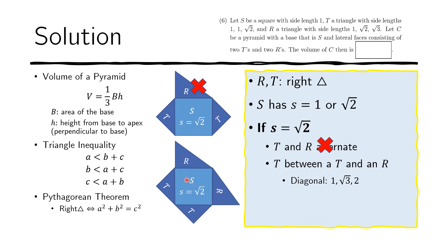Now let's look at the other diagonal. The length of this diagonal is also 2. The triangle formed would have sides 1, 2, and 1 — that is, one side of 1, the diagonal of 2, and another side of 1. We do have a problem with this triangle because it does not satisfy the triangle inequality: we have a 2 here, which is not greater than 2, which is 1 plus 1. So this is not a valid triangle, and we have eliminated the possibility of S being square root of 2.